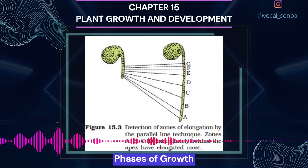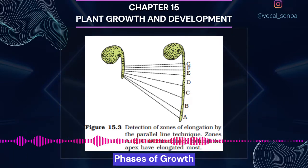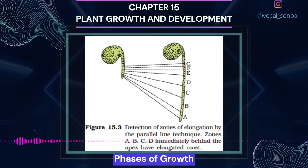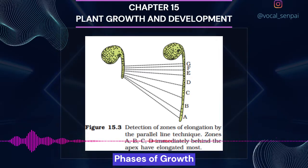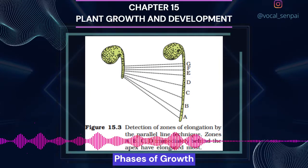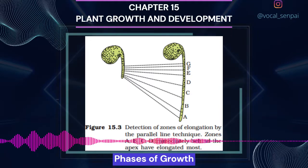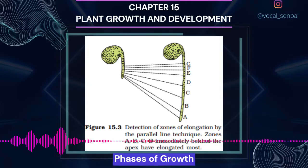Phases of growth. The period of growth is generally divided into three phases, namely meristematic, elongation and maturation, figure 15.3. The constantly dividing cells, both at the root apex and the shoot apex, represent the meristematic phase of growth. The cells in this region are rich in protoplasm, possess large conspicuous nuclei. Their cell walls are primary in nature, thin and cellulosic with abundant plasmodesmata connections. The cells proximal, just next away from the tip, to the meristematic zone represent the phase of elongation. Increased vacuolation, cell enlargement and new cell wall deposition are the characteristics of the cells in this phase. Further away from the apex lies the portion of axis which is undergoing the phase of maturation. The cells of this zone attain their maximal size in terms of wall thickening and protoplasmic modifications.